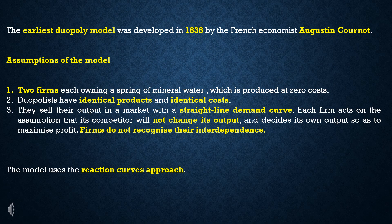The second assumption is that the duopolists have identical products and identical costs. Third, they sell their output in a market with a straight-line demand curve. Fourth, each firm acts on the assumption that its competitor will not change its output, and decides its own output so as to maximize profit. This is a key assumption of Non-Collusive Oligopoly.